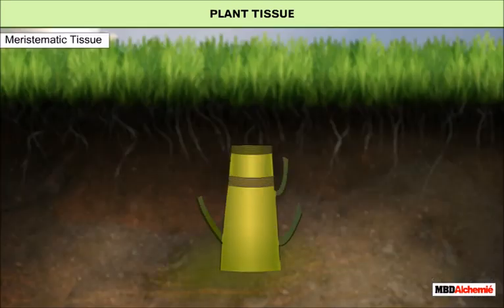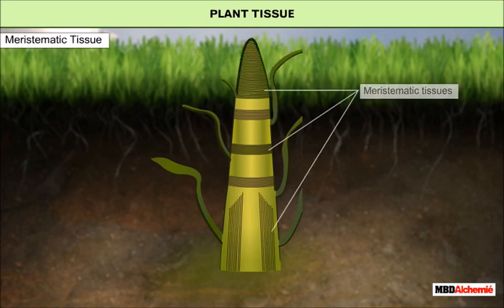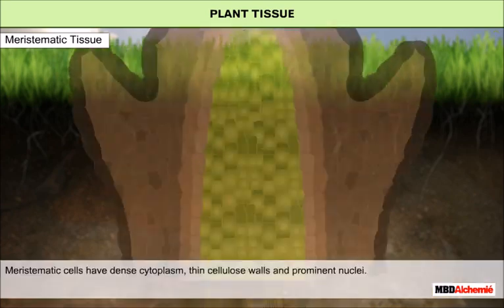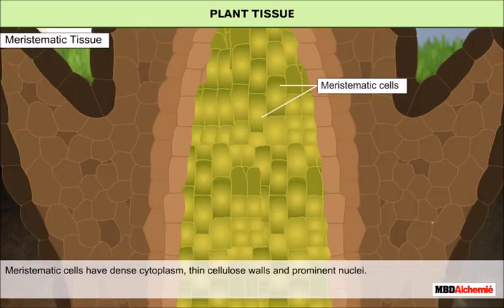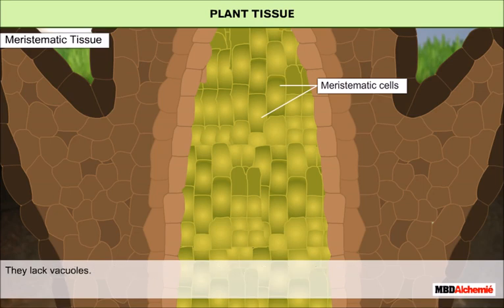Meristematic tissue is made up of cells that have the power to divide continuously. They help in increasing the length and girth of the plant. The cells of this tissue are very active. They have dense cytoplasm, thin cellulose walls and prominent nuclei. They lack vacuoles.